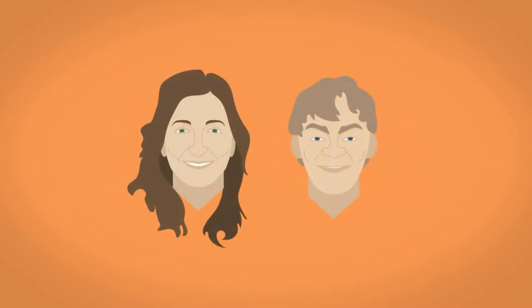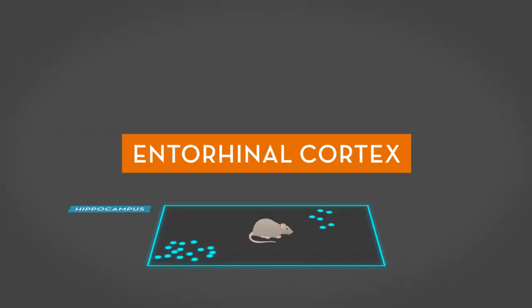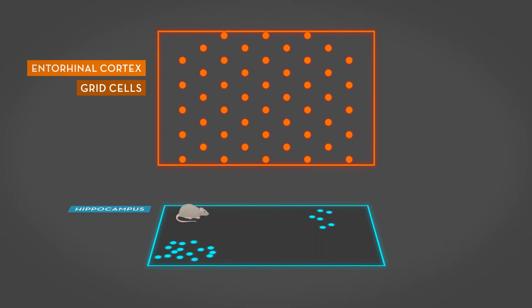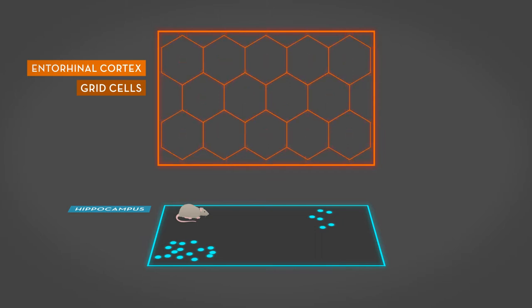May-Britt Moser and Edvard Moser directed their attention to a nearby area in the brain called the entorhinal cortex. Here, they noticed an astonishing activity pattern, where newly discovered cells, they called grid cells, fired each time the rat passed specific locations in the room. From these locations, a distinct pattern appeared, an almost perfect hexagonal grid pattern that covered the entire room, just like the holes in a beehive.